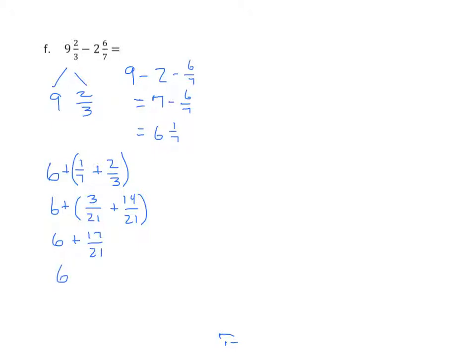And 1 seventh becomes 3 twenty-firsts, and 2 thirds is 14 twenty-firsts. I now find the sum of the fractions, and I get 17 twenty-firsts, and my difference between 9 and 2 thirds and 2 and 6 sevenths is 6 and 17 twenty-firsts. Okay, the other method now, we're going to see the advantage of method one in this, because we're going to be working with a little bit bigger numbers.